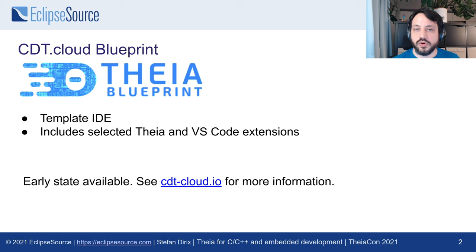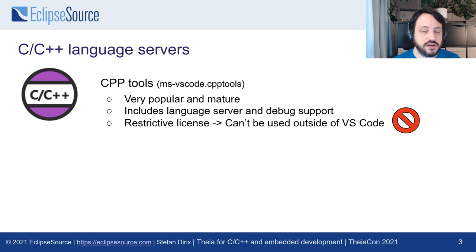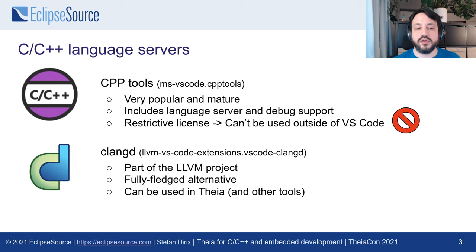The first question you will ask yourself is: which language server shall I choose? The most popular in the VS Code marketplace is CPP tools by Microsoft. However, it has a very restrictive license, which means it can't be used outside of VS Code. The most popular alternative is clangd. It's part of the LLVM project, it's fully-fledged, and it can be used in Theia and other tools. This means clangd is the de facto choice for all existing and upcoming IDE vendors.